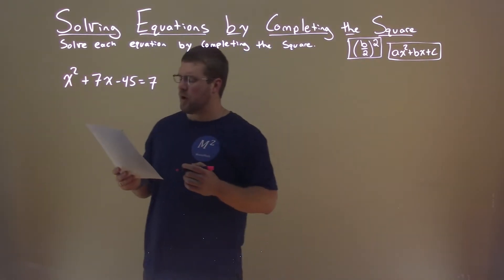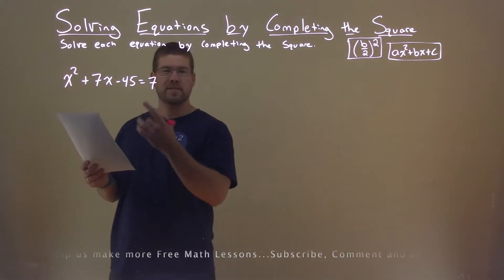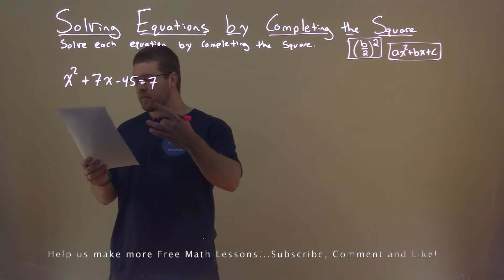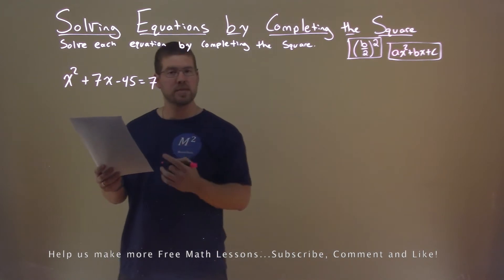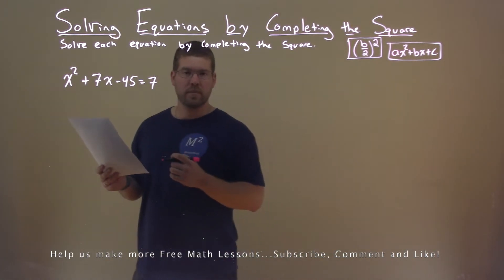We're given this problem right here: x squared plus 7x minus 45 equals 7, and we want to solve this by completing the square.